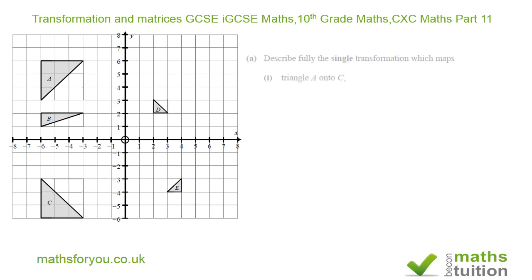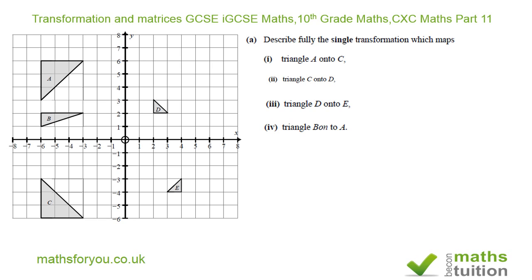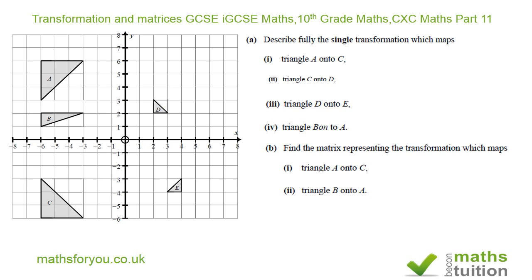Here's the first question and the triangles involved. It says: describe the single transformation which maps triangle A onto triangle C; triangle C onto triangle D; triangle D onto triangle E; and triangle B onto triangle A. Section B says: find the matrix representing the transformation which maps triangle A onto triangle C, and the matrix which maps triangle B onto triangle A.